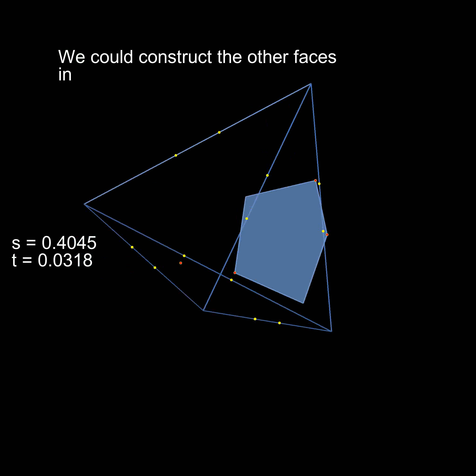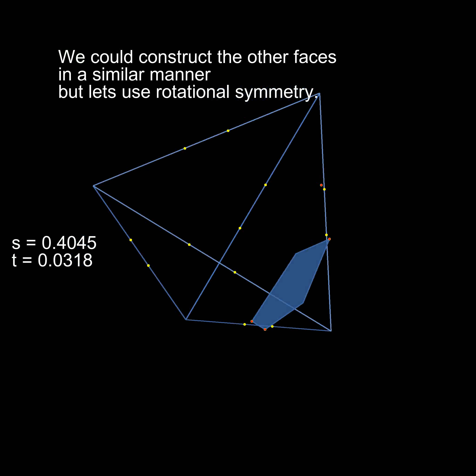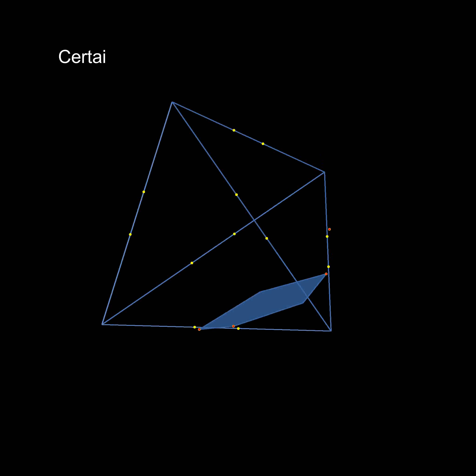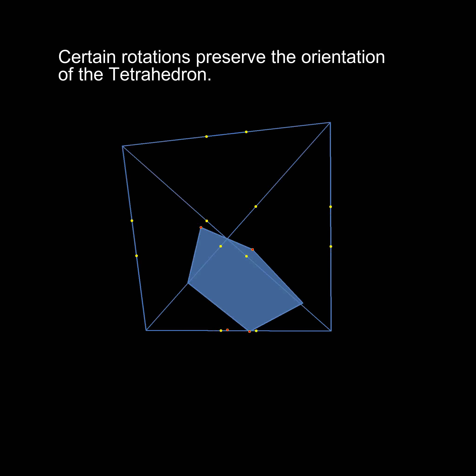Now we could construct the other faces in a similar manner by taking those yellow and red points. But here let's make use of the rotational symmetry of the tetrahedron. Meaning that rotated a certain way, the orientation of the tetrahedron is preserved.